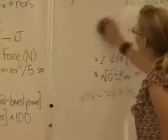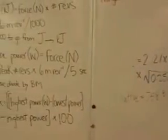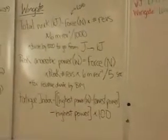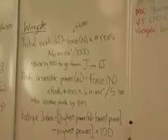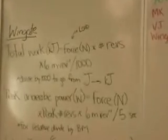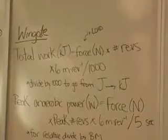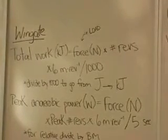For the Wingate, the total work in kilojoules is equal to the force in newtons times the number of revolutions times 6 meters per revolution. Each revolution is 6 meters long divided by 1000.